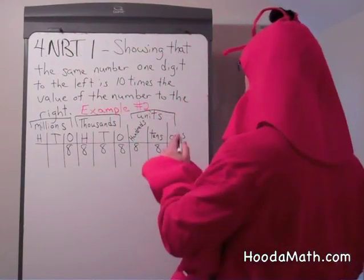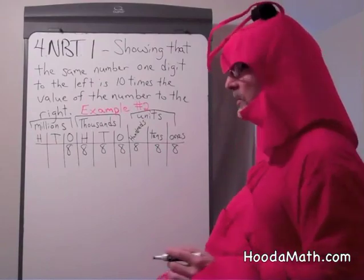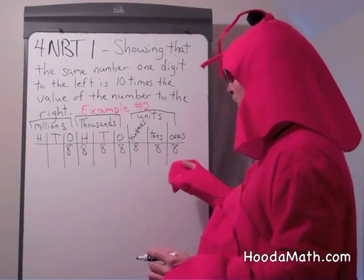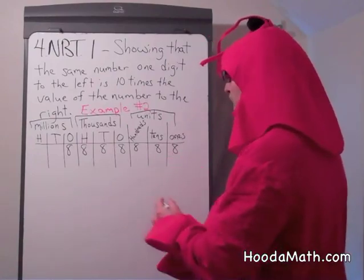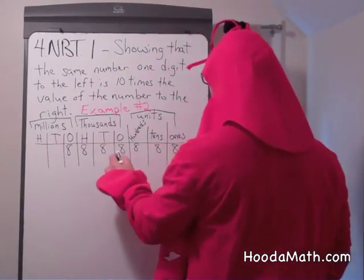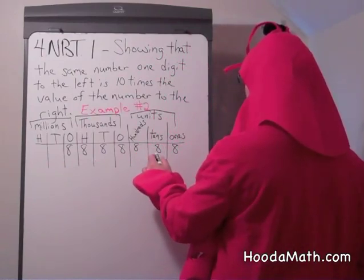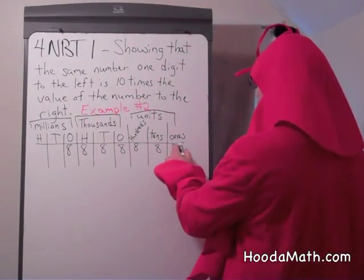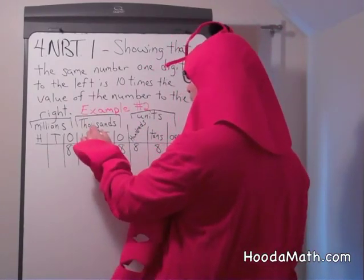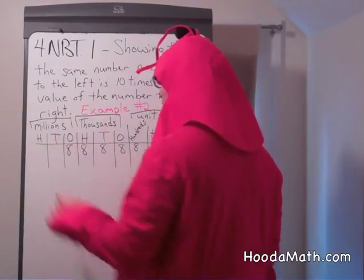We're going to use a number value chart to help us compare digits of the same value. So let's say we have this number: 8,888,888. These are the ones, tens, hundreds — the units — one tens, hundreds, thousands, one tens, hundreds, millions.